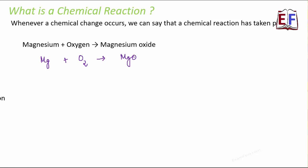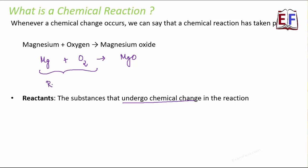Now, all those substances that undergo the chemical change, they are called reactants. So in this case, magnesium and oxygen, they are undergoing the change. Magnesium was earlier magnesium and now it became magnesium oxide, so it underwent a change.